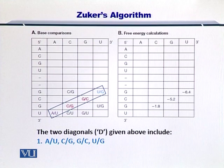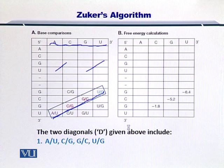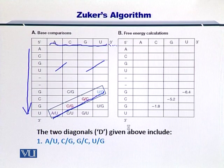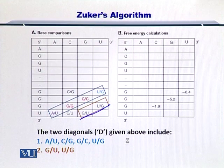In this case, there are two possibilities in this given example. The two diagonals include A-U, C-G, G-C, and U-G. Of course, it is possible that there are many other diagonals in case the nucleotide sequence is different. Please also note that in this example, we have given the partial sequence of the RNA molecule on top. The same sequence should be there on both sides of matrices A and B. Another diagonal in this example is the G-U and U-G diagonal as given here.